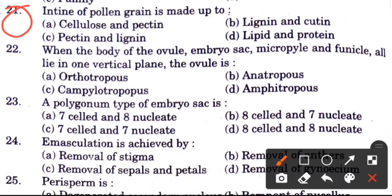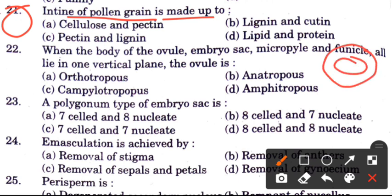Question 21: Exine and pollen grains are made up of — the outermost layer is exine and the innermost layer is intine. Question 22: When the body of the ovule, embryo sac, micropyle and funicle all lie in one vertical plane, the ovule is called what?